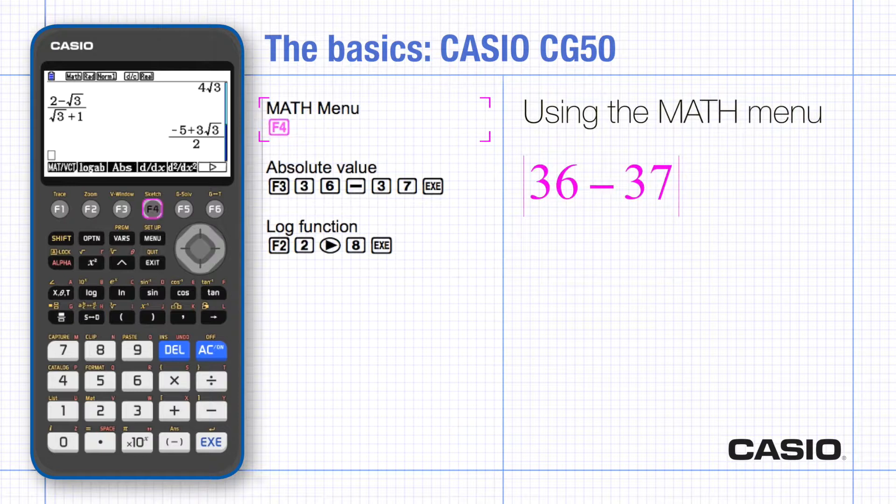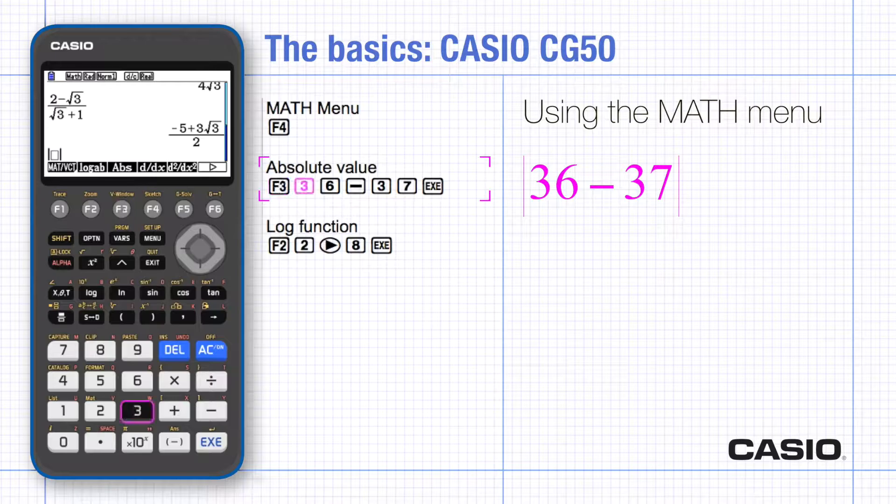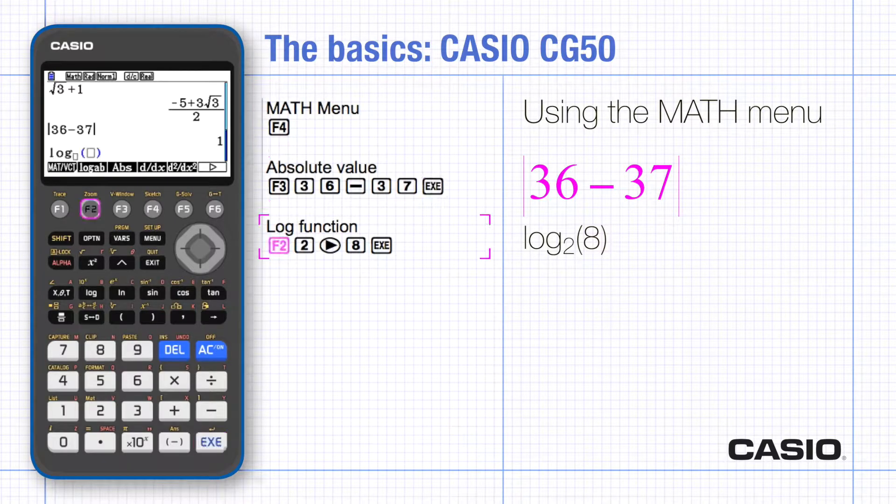Use the math menu to find modulus. It's labelled abs. Notice the more familiar notation is on the screen for you to type. Logs are also on the math menu which is still open. Scroll across to type what you see.